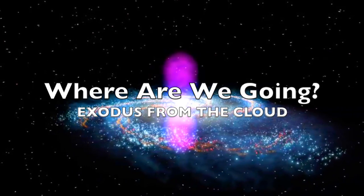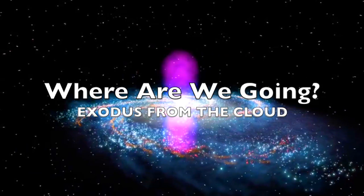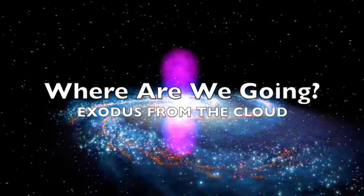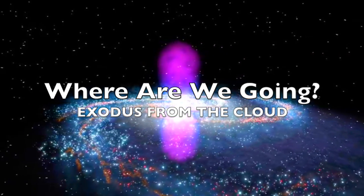In part two of where are we going, we have two goals. First, we want to constrain the direction of motion of our solar system even better than we did in part one.